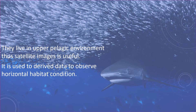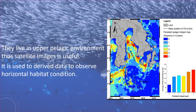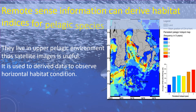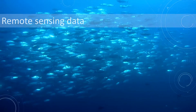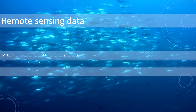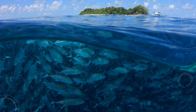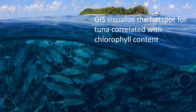Skipjack tuna is considered to be a pelagic species, which means they live in the upper pelagic environment. Satellite images can observe the horizontal habitat condition, and remote sensing can derive habitat indices for the skipjack tuna, providing information on chlorophyll content and sea surface temperature.